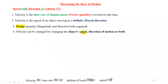Velocity can be changed by changing the object's speed, direction of motion, or both. If we want to change velocity, we have three options. First, we can change the object's speed. Second option: change the direction of motion — the direction in which the object is moving can be changed. Third option: a combination of option one and option two.